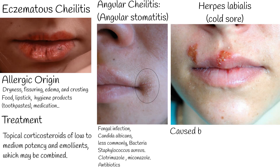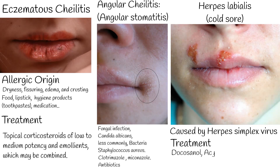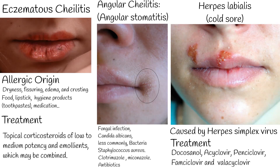Herpes labialis, or cold sore, is a common cause of infectious cheilitis. A lesion caused by recurrence of a latent herpes simplex infection can occur in the corner of the mouth. Docosanol, a saturated fatty alcohol, is a safe and effective topical application for cold sores. Acyclovir, penciclovir, famciclovir, and valacyclovir are also effective.